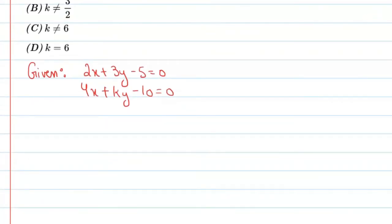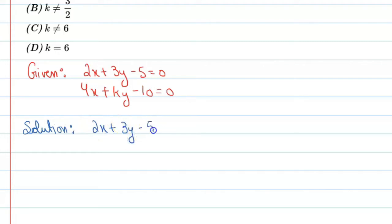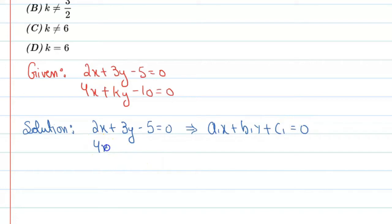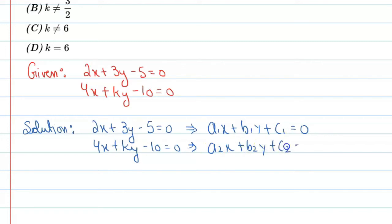We can write the two equations in standard form. The first equation 2x + 3y - 5 = 0 is represented as a1x + b1y + c1 = 0, and the second equation 4x + ky - 10 = 0 is represented as a2x + b2y + c2 = 0.